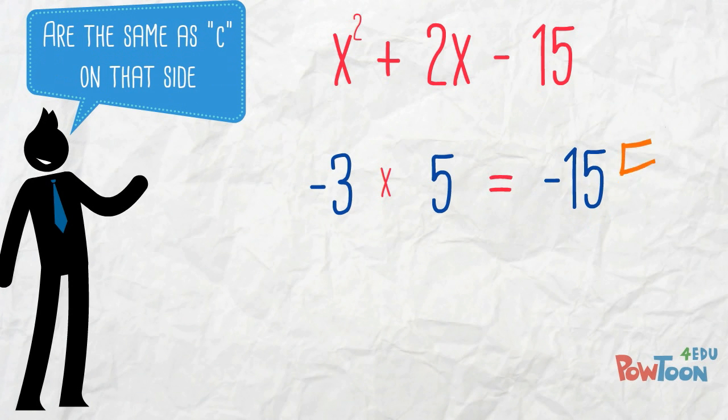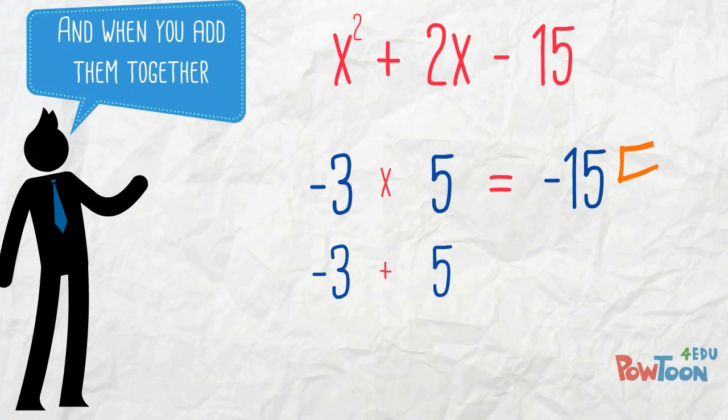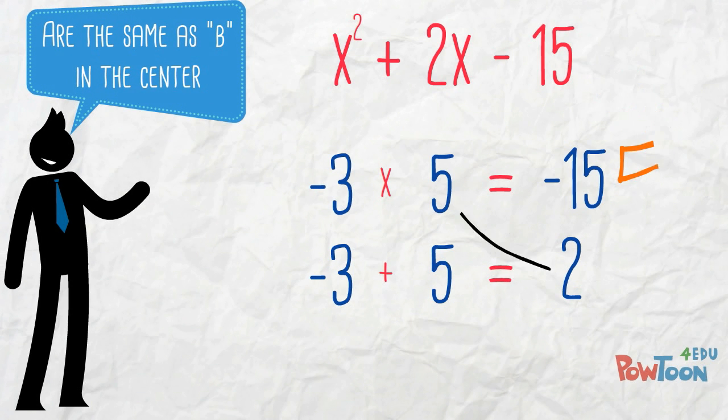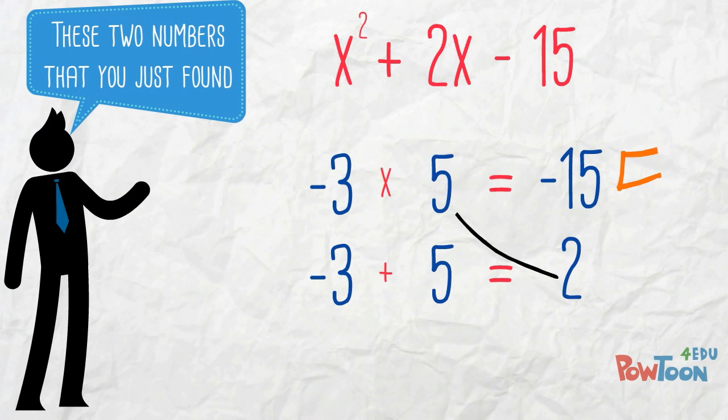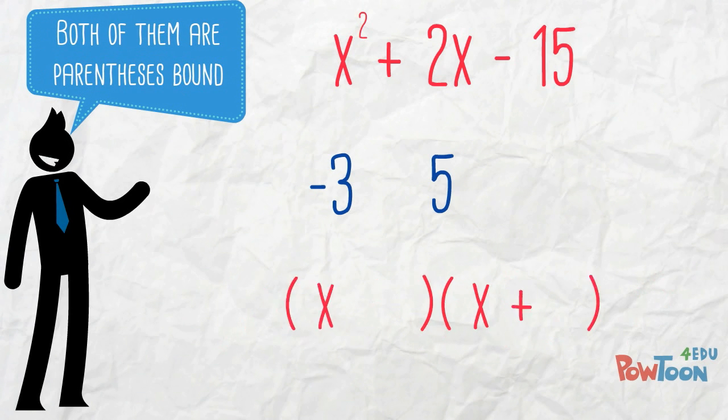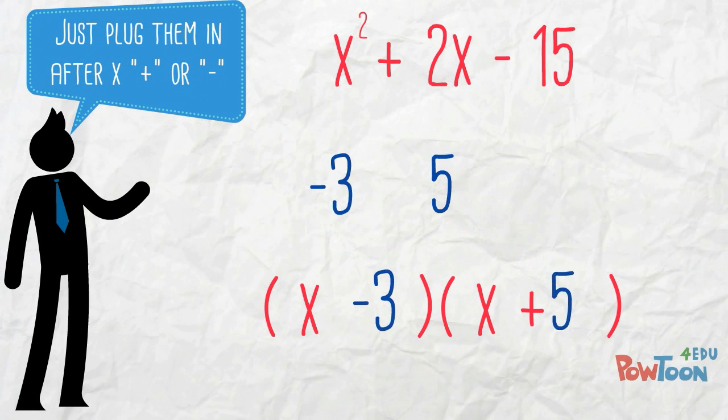Find two numbers that would multiply, are the same as C on that side. And when you add them together, are the same as B in the center. These two numbers that you just found, both of them are parenthesis bound. Just plug them in after.